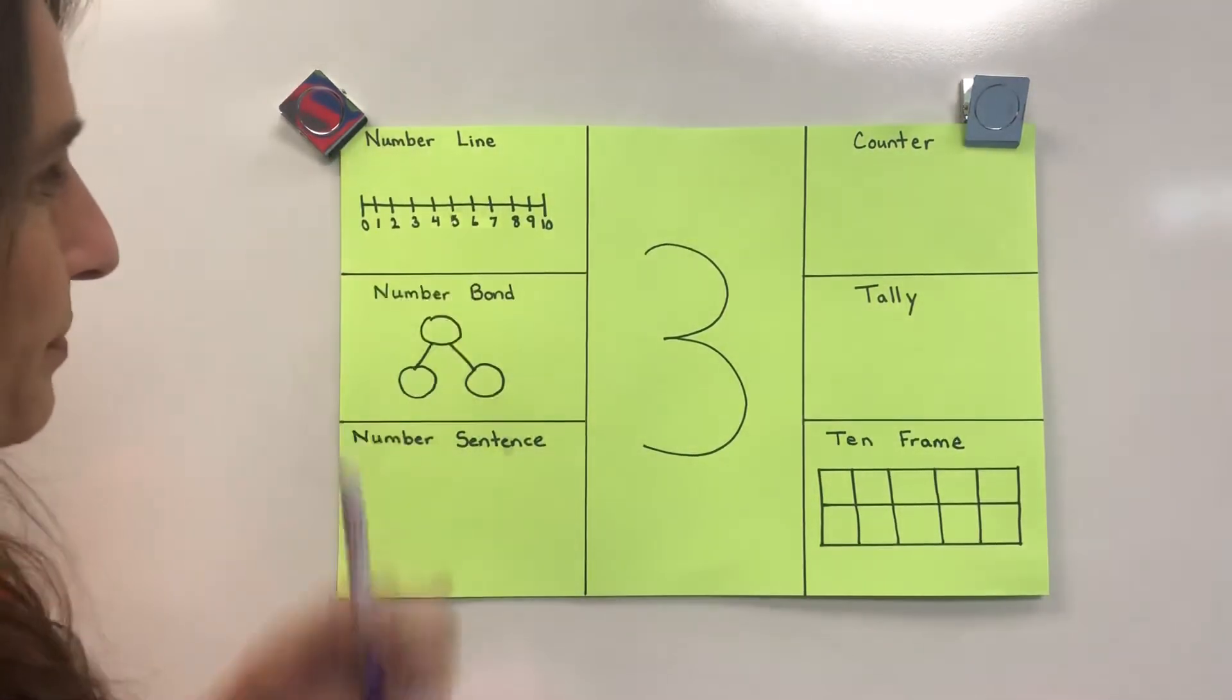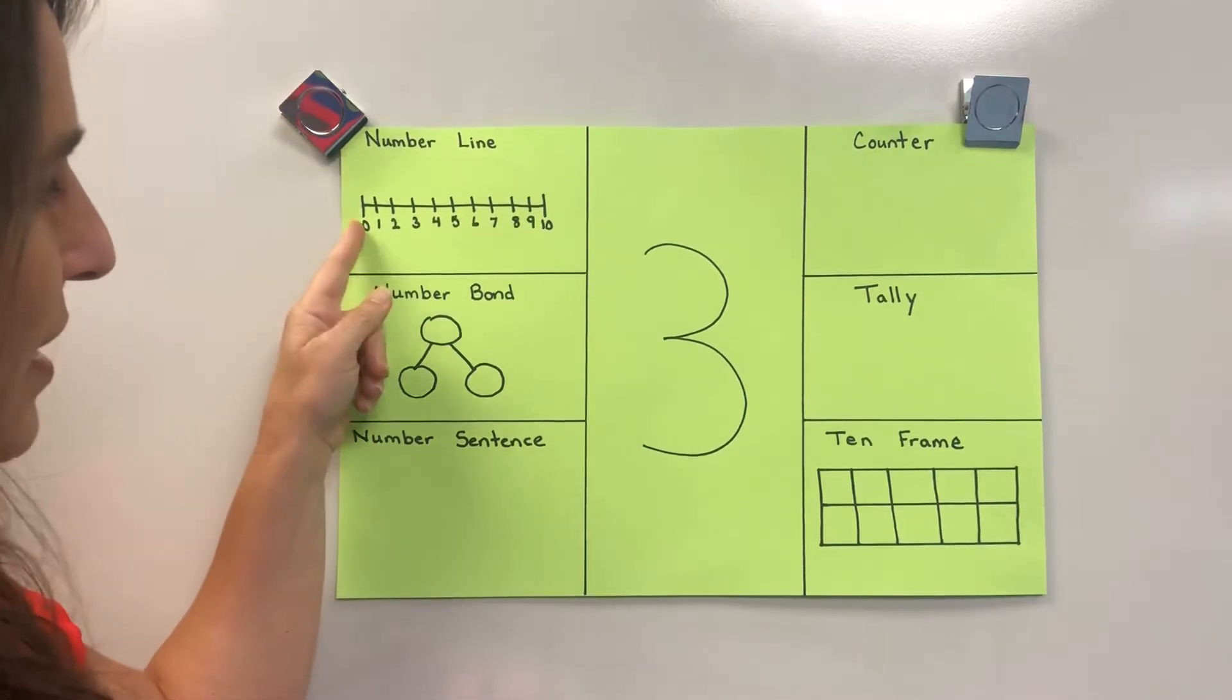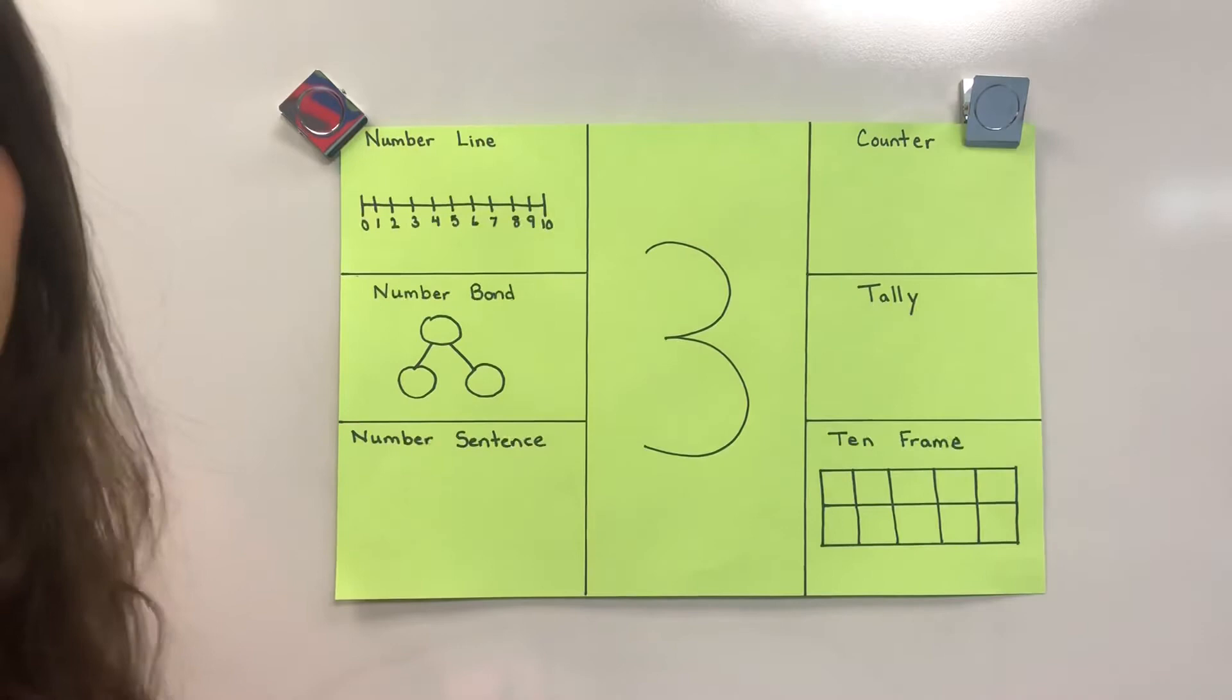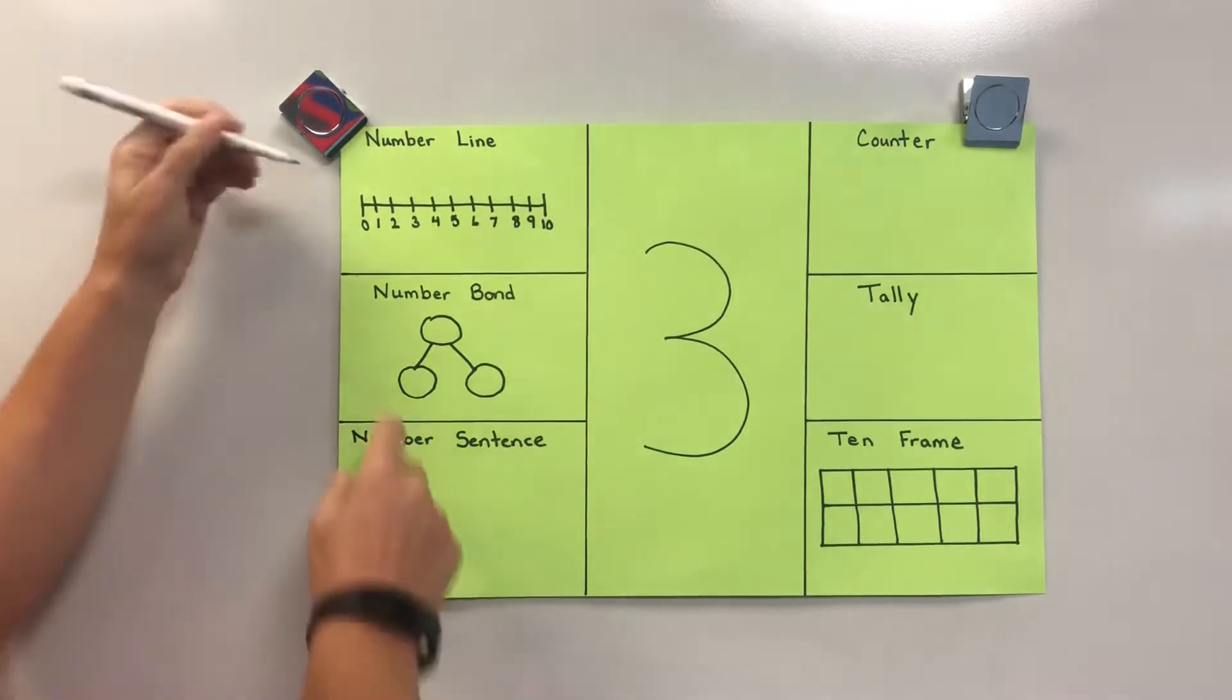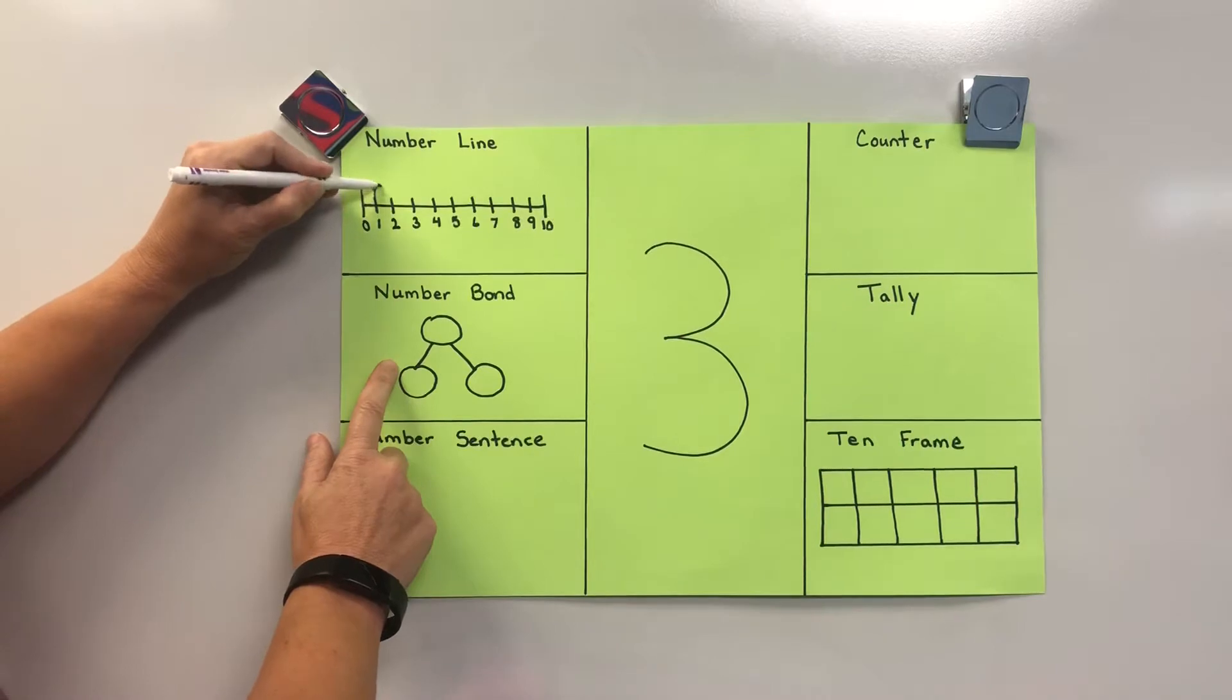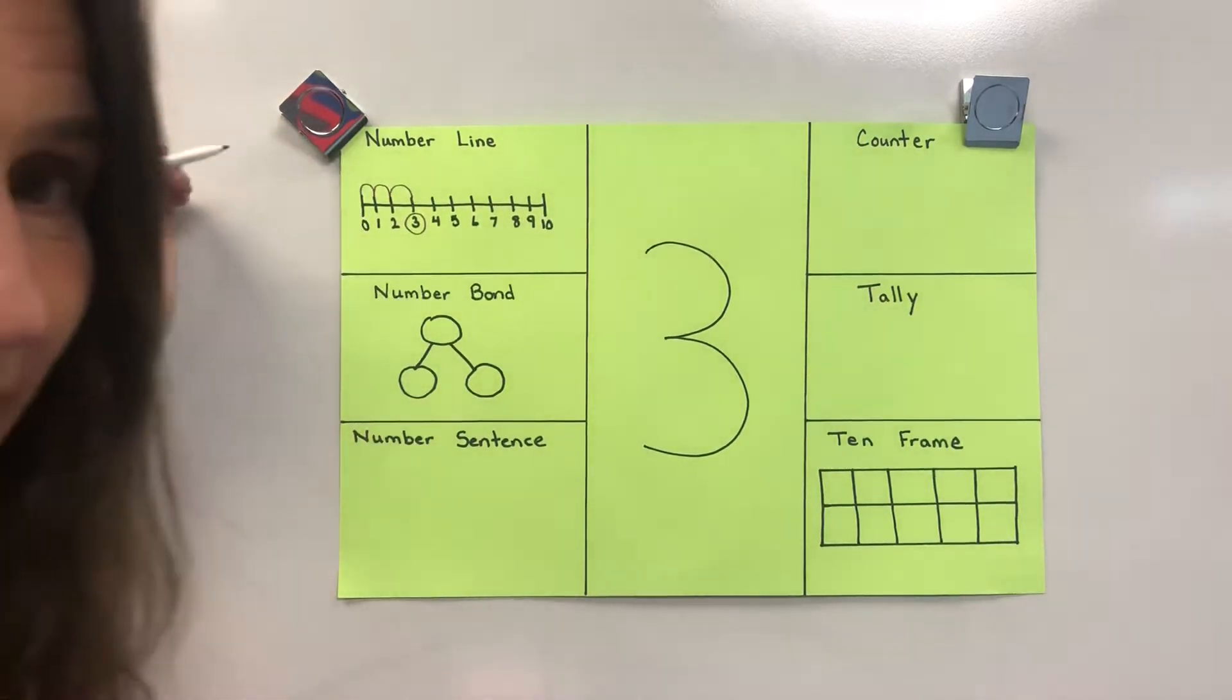On the number line, remember number lines usually start with zero and can go up as high as you want. This one goes to ten. We're going to find number three on the number line. If we start at zero and make one, two, three jumps, we land on number three.